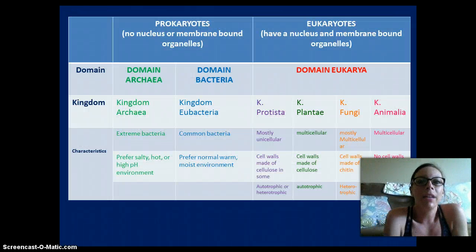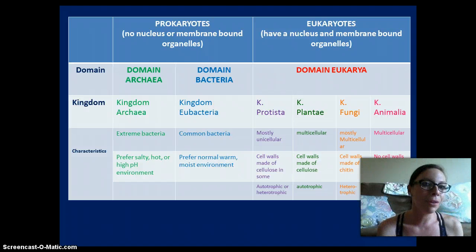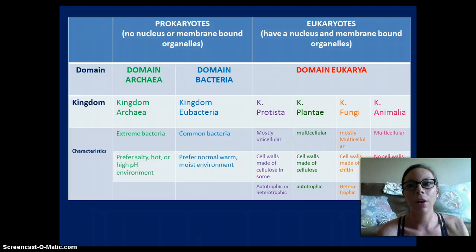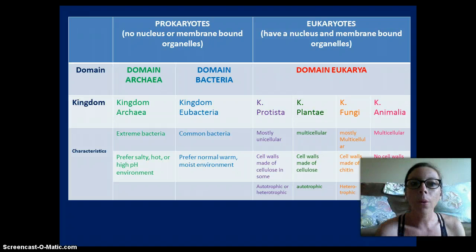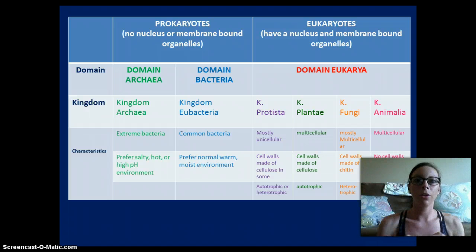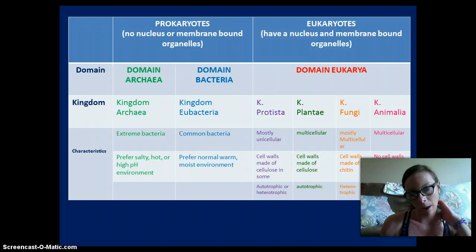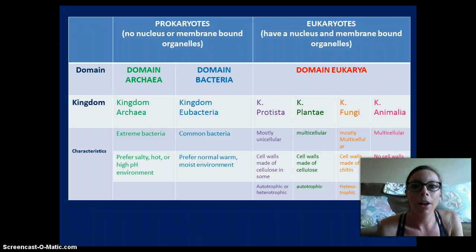We are going to talk about the classification of organisms. We have prokaryotic organisms, which have no nucleus and no membrane-bound organelles, and we have eukaryotes, which have a nucleus and membrane-bound organelles. Of our prokaryotes, we have domain Archaea and domain Bacteria, and under our eukaryotes we have domain Eukarya. The domain is a very broad grouping, and then we have our kingdoms: under prokaryotes are Archaea and Eubacteria, and under eukaryotes are Protista, Plantae, Fungi, and Animalia.